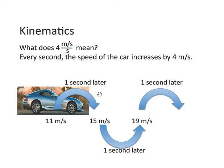And another second later, it would be 23. So simply by understanding what 4 meters per second per second means, every second, the speed of the car increases by 4 meters per second. You don't need a formula to figure out simple analysis of the motion of a car.